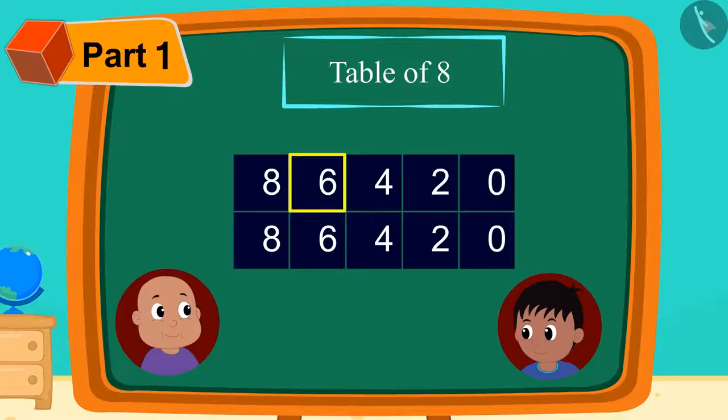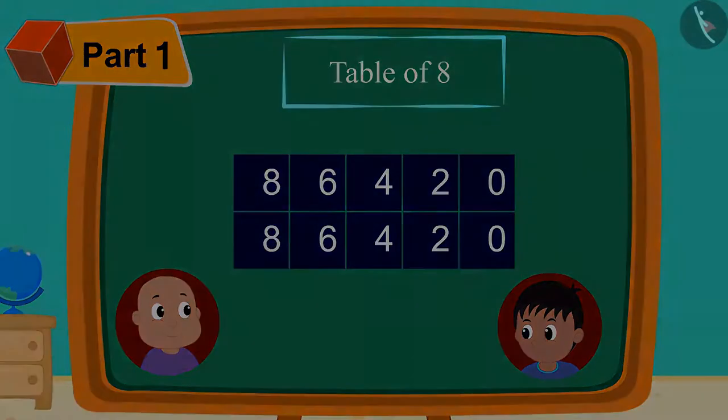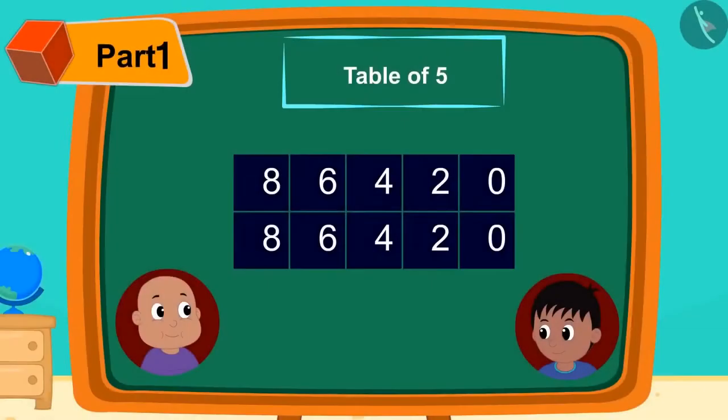8, 6, 4, 2, 0. Now in front of the digits written in the first line, Raju wrote 0, 1, 2, 3, 4 in this way.